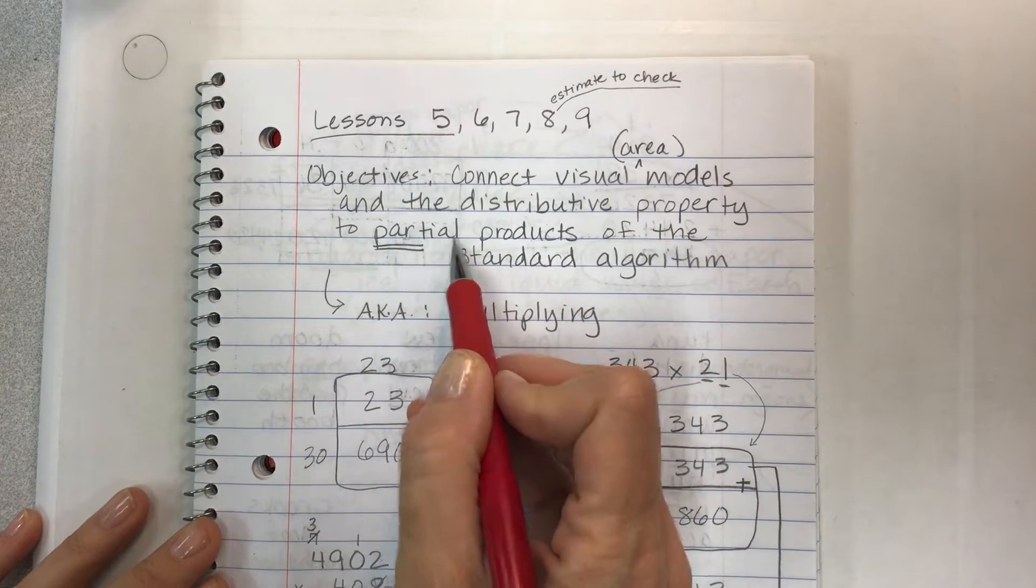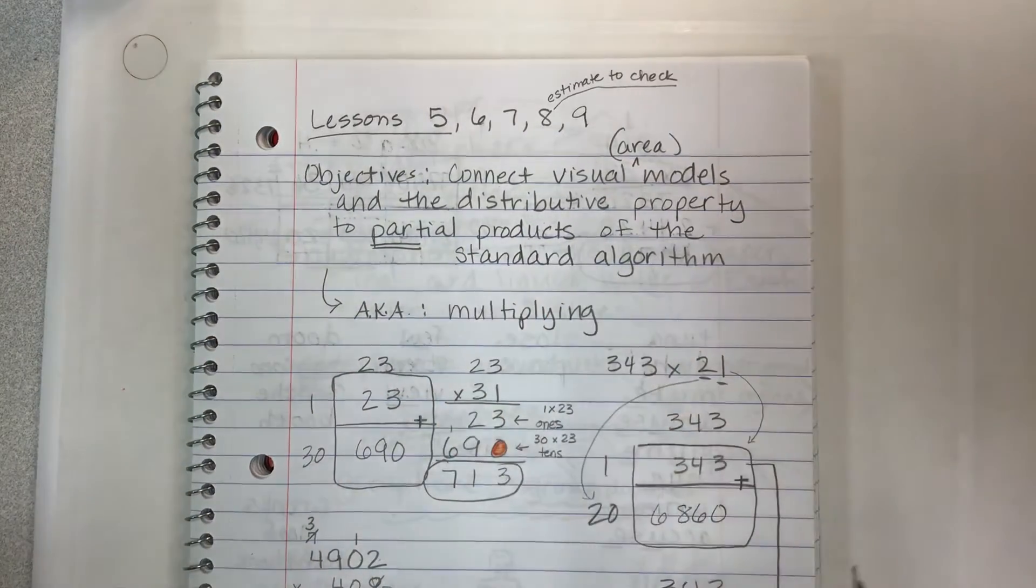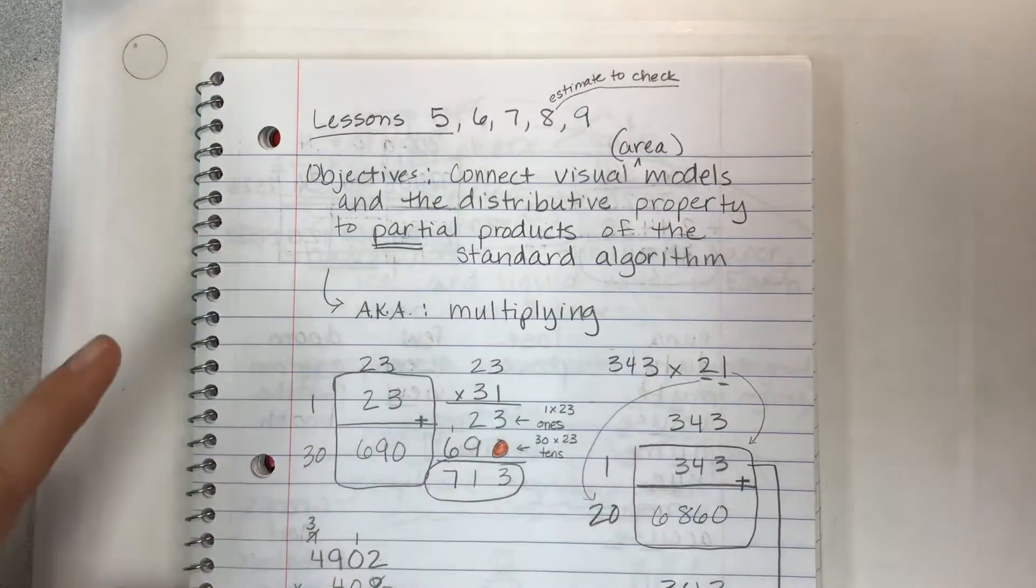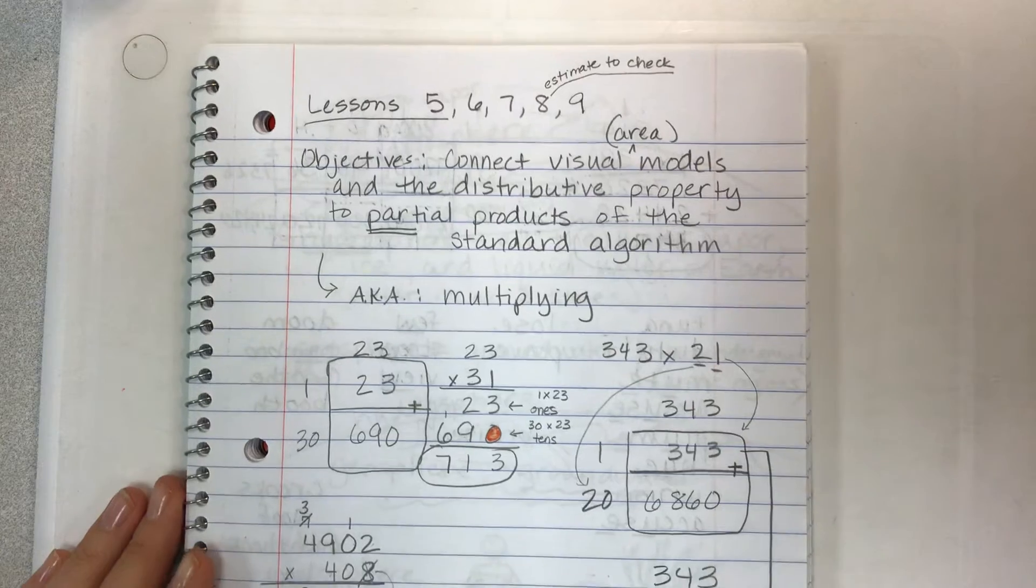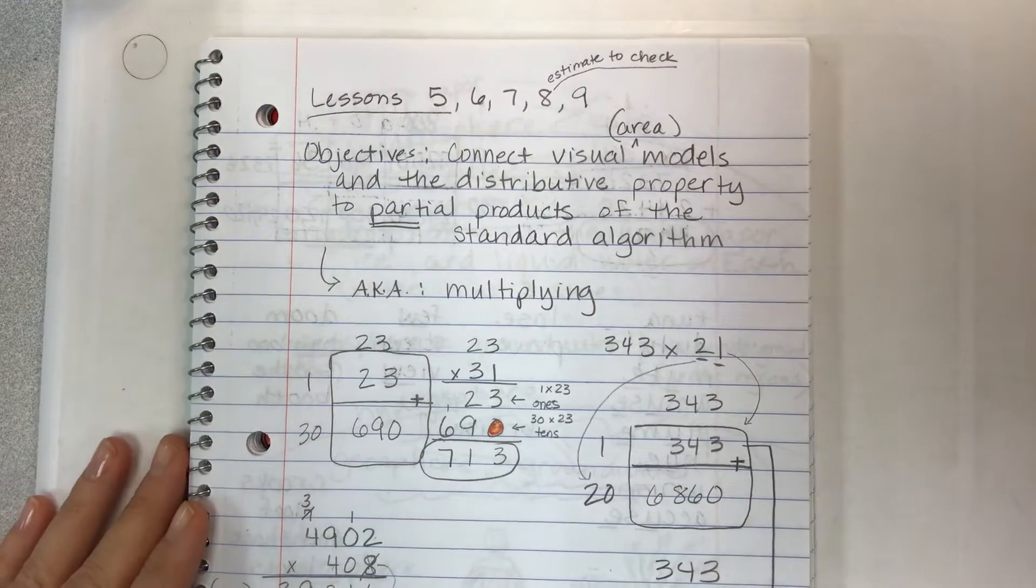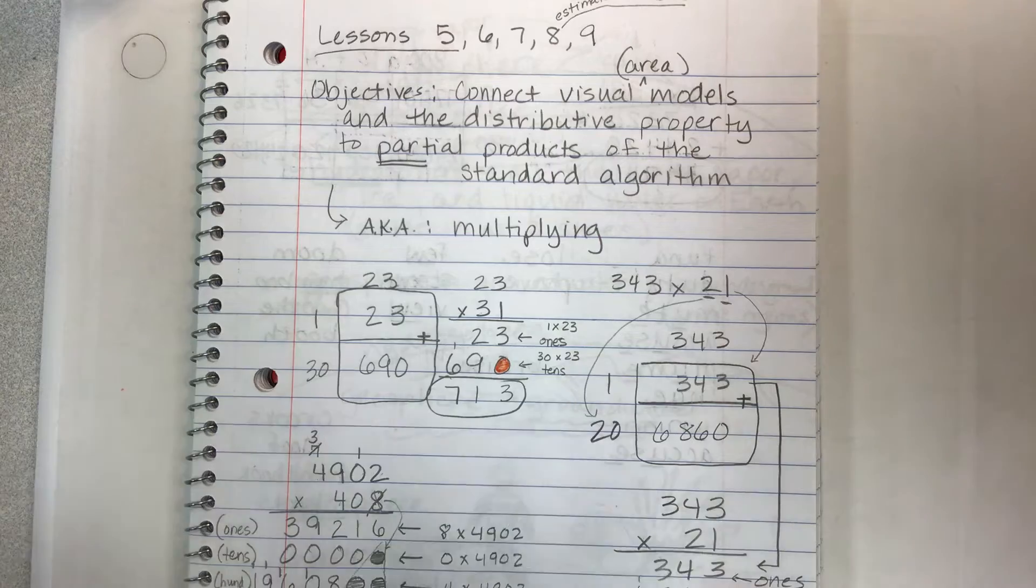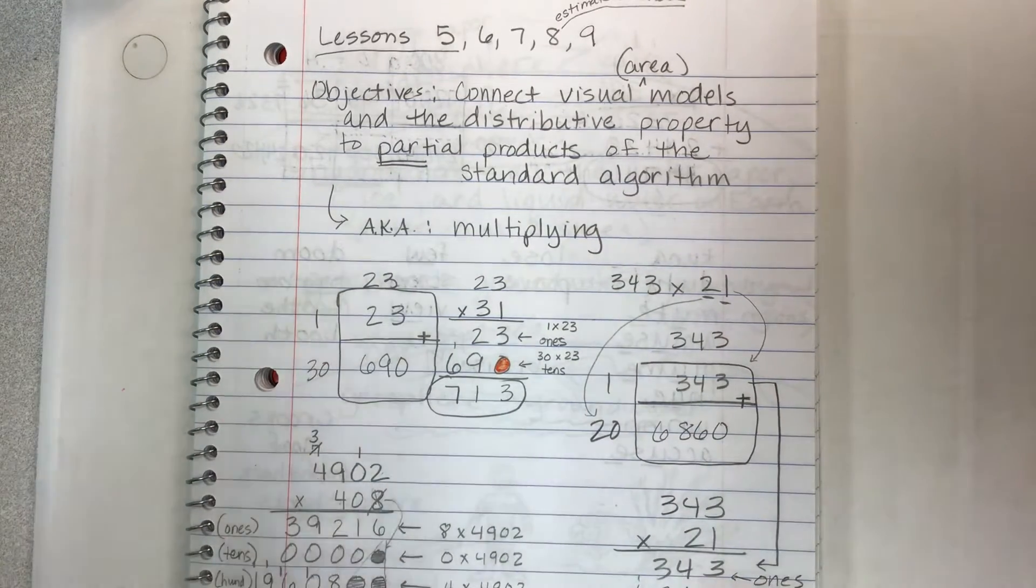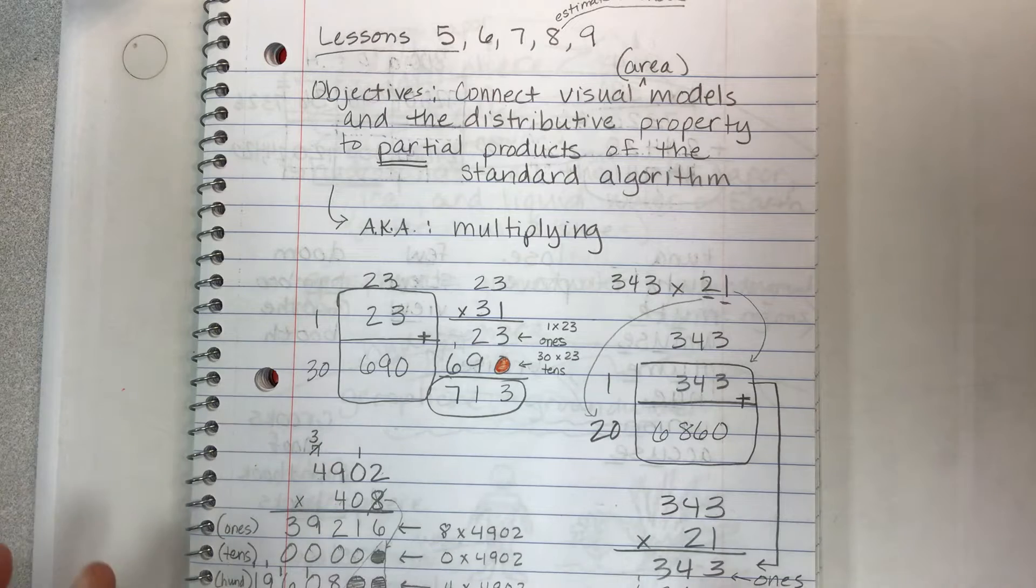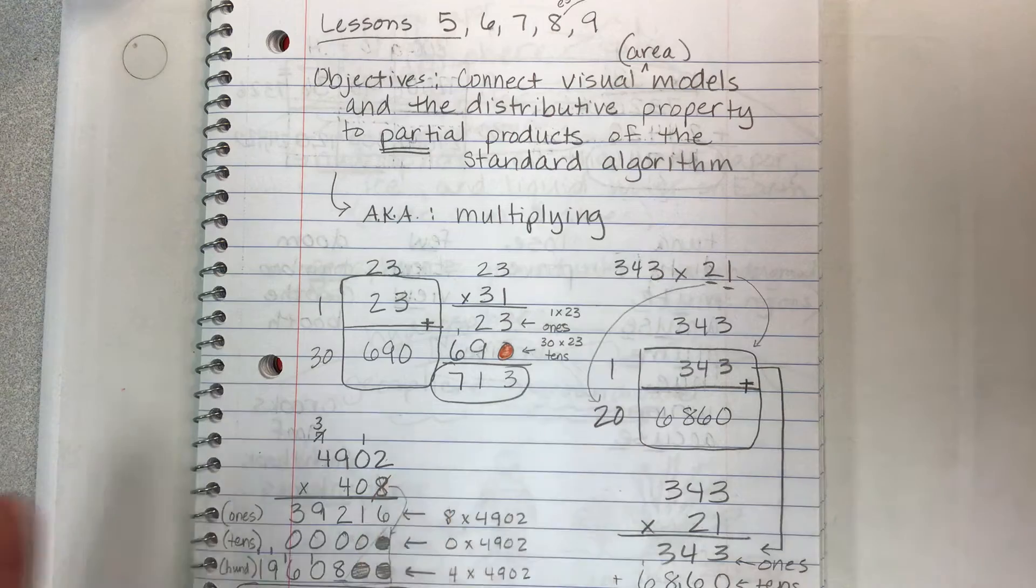Notice that this word partial contains the word part, so it's just a fancy way of saying part of the product of the standard algorithm. We're going to learn multiplying. As with long division, multiplication has many different steps and place value really matters. You have to line things up very carefully.